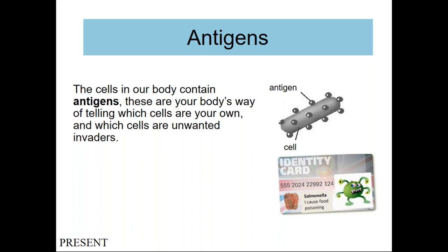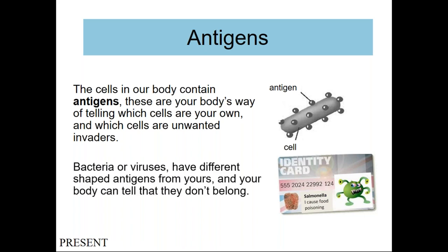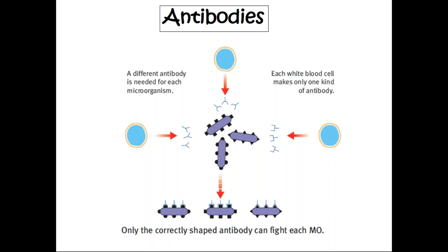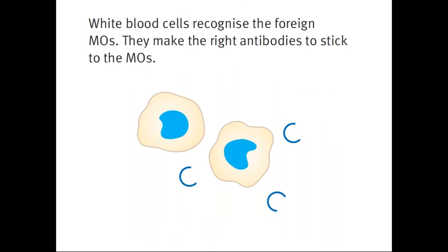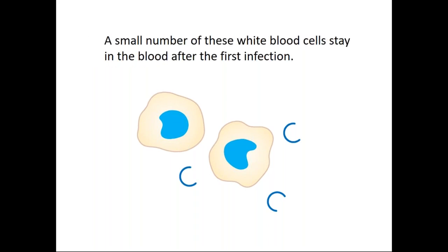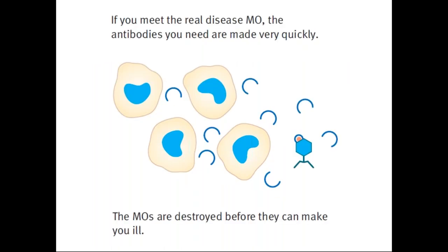Antigens: the cells in our body contain antigens, which are your body's way of identifying which cells are your own and which are unwanted invaders. Bacteria or viruses have different shaped antigens from yours, and your body can tell that they don't belong. A different antibody is needed for each microorganism. Each white blood cell makes only one kind of antibody. A small number of white blood cells stay in the blood after the first infection, so if you encounter the same disease again, antibodies are made very quickly and the microorganisms are destroyed before they can make you ill.